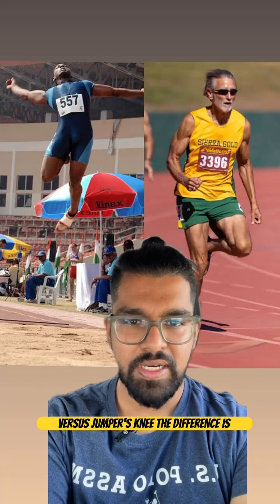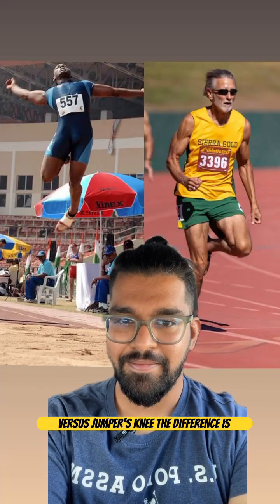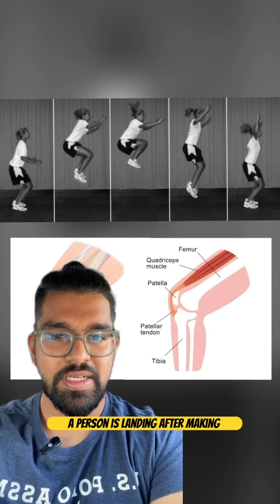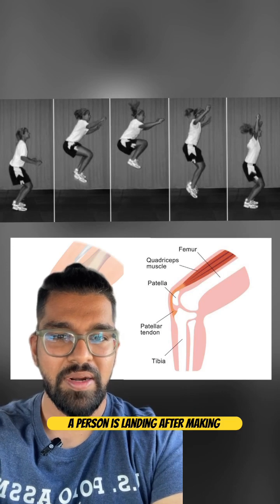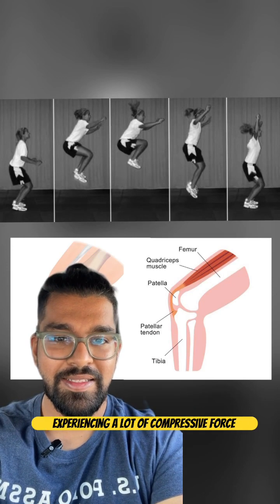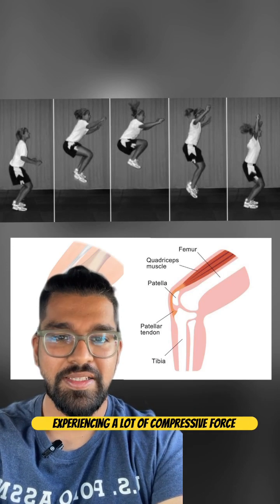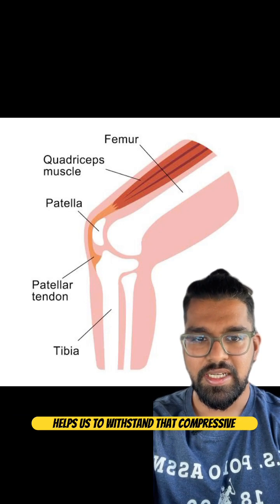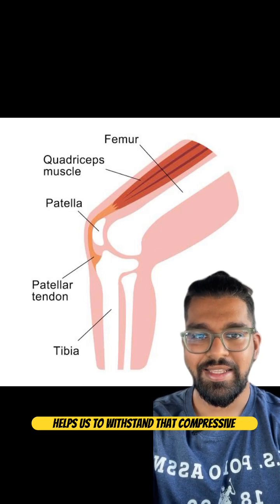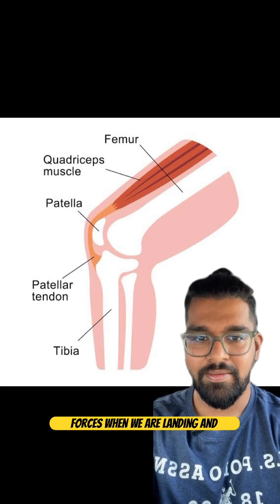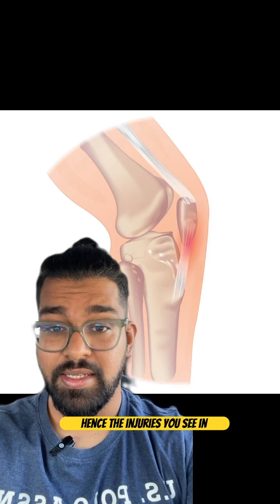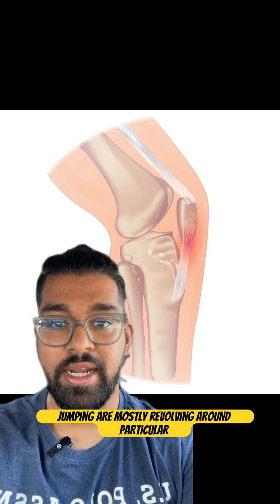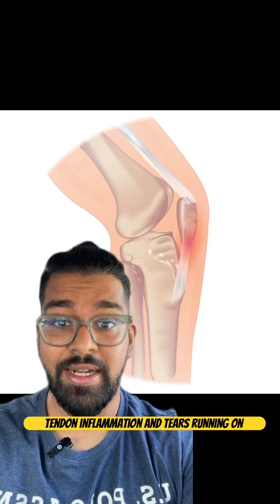What's the difference between a runner versus jumper's knee? The difference is the structures that are involved. When a person is landing after making a jump, their knee joint is experiencing a lot of compressive force. The patellar tendon in the knee joint helps us to withstand those compressive forces when we are landing. Hence the injuries you see in jumping are mostly revolving around patellar tendon inflammation and tears.